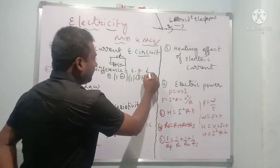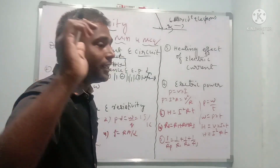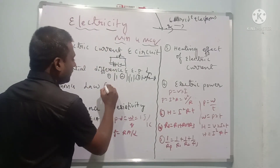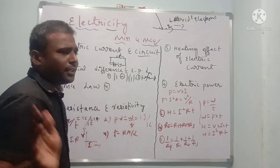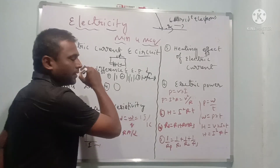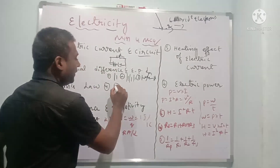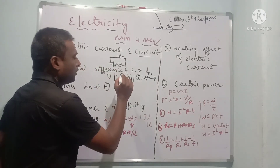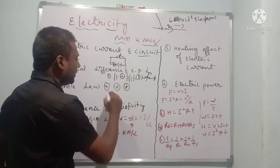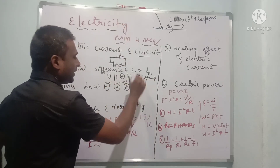If an arrow mark is added to the resistor symbol, that means it is a rheostat. For voltmeter and ammeter, just draw a circle — write V for voltmeter, and A for ammeter. Plus and minus signs indicate the positive and negative terminals.